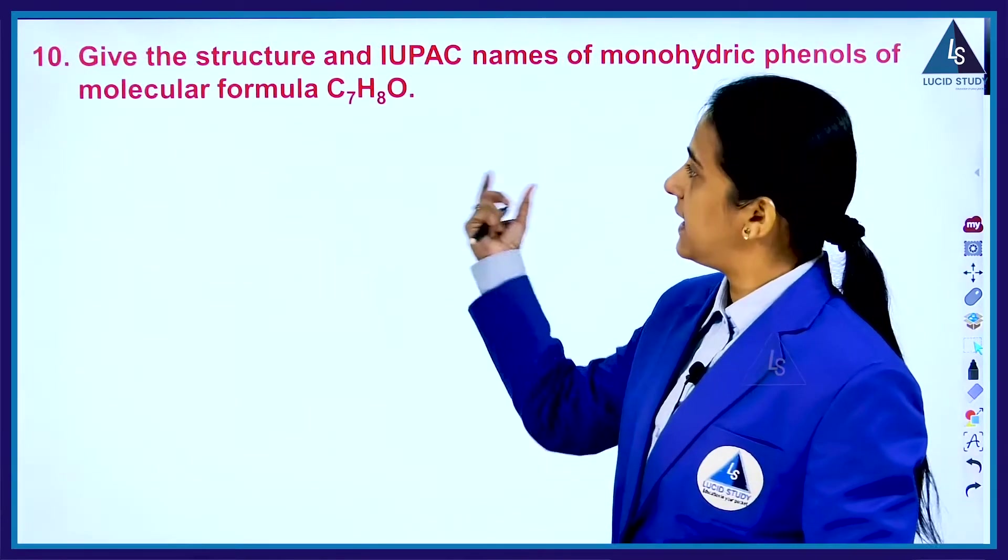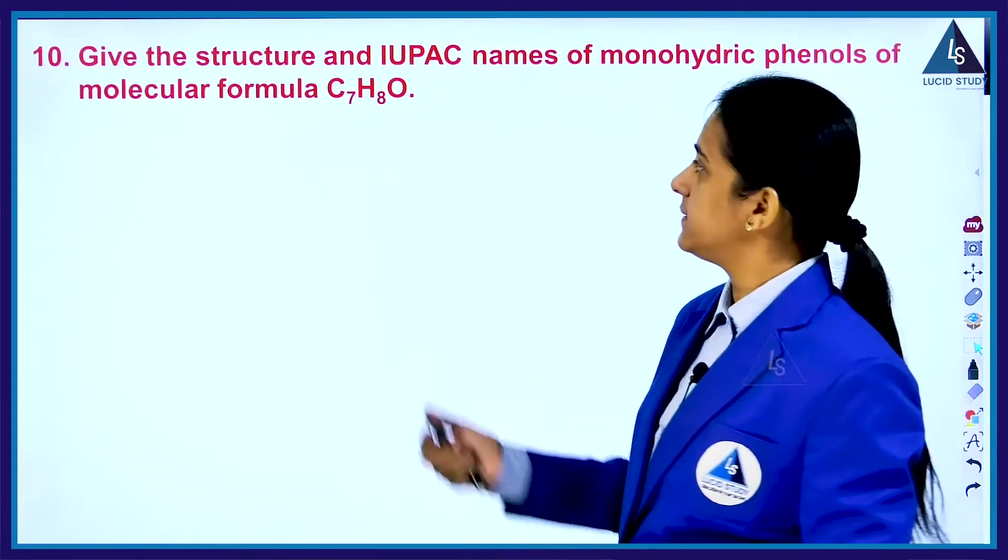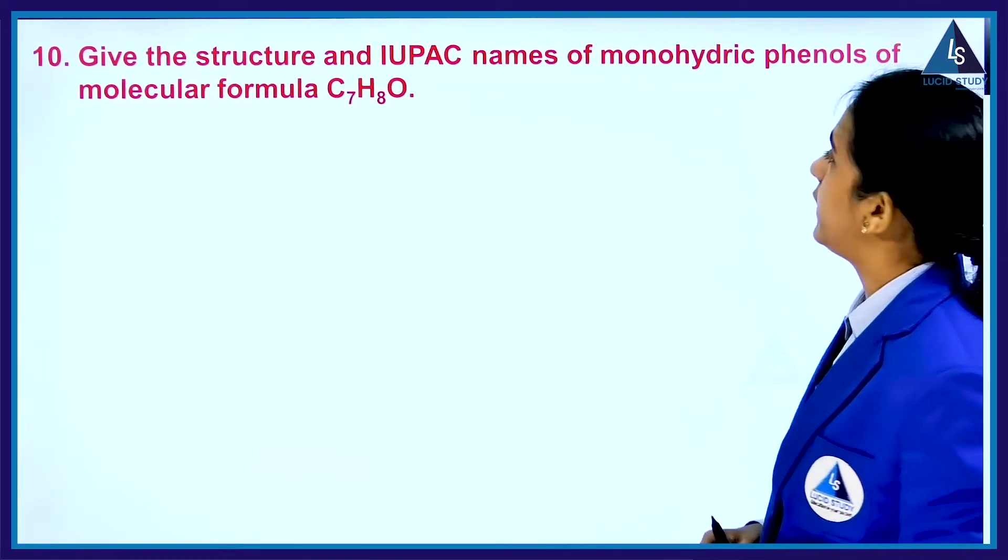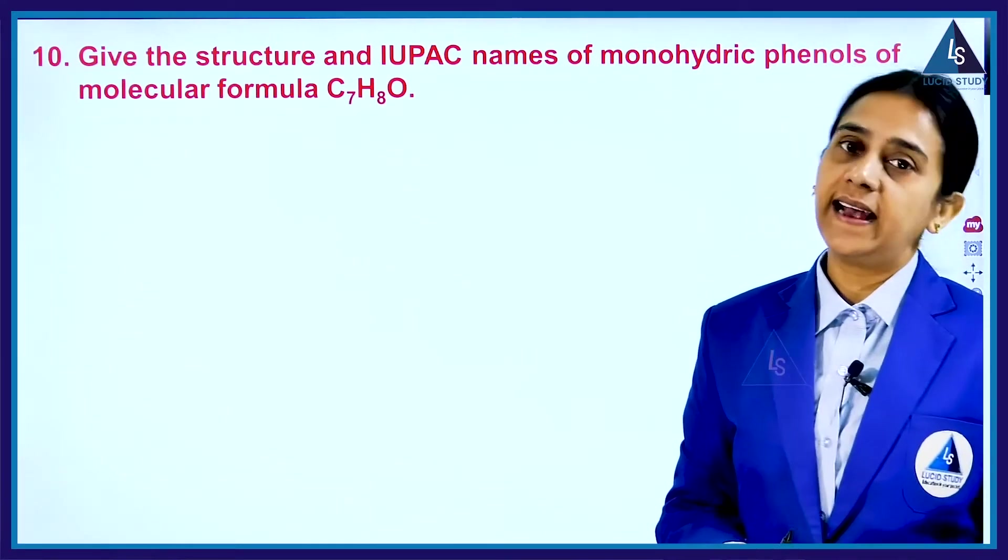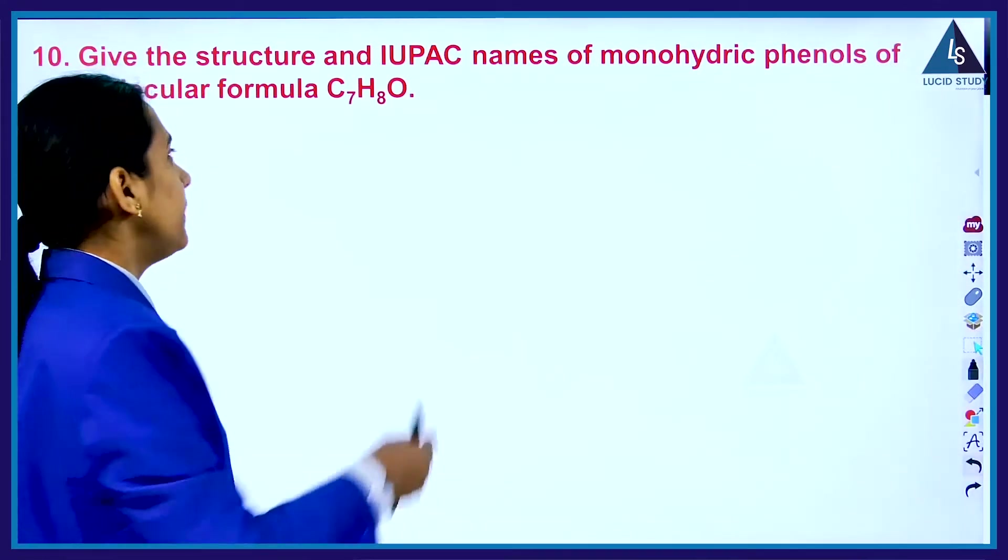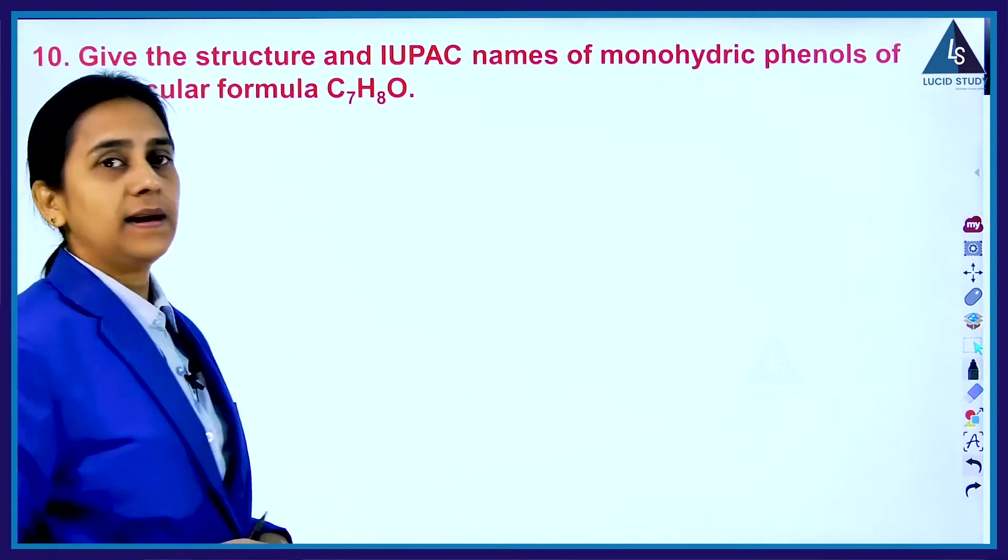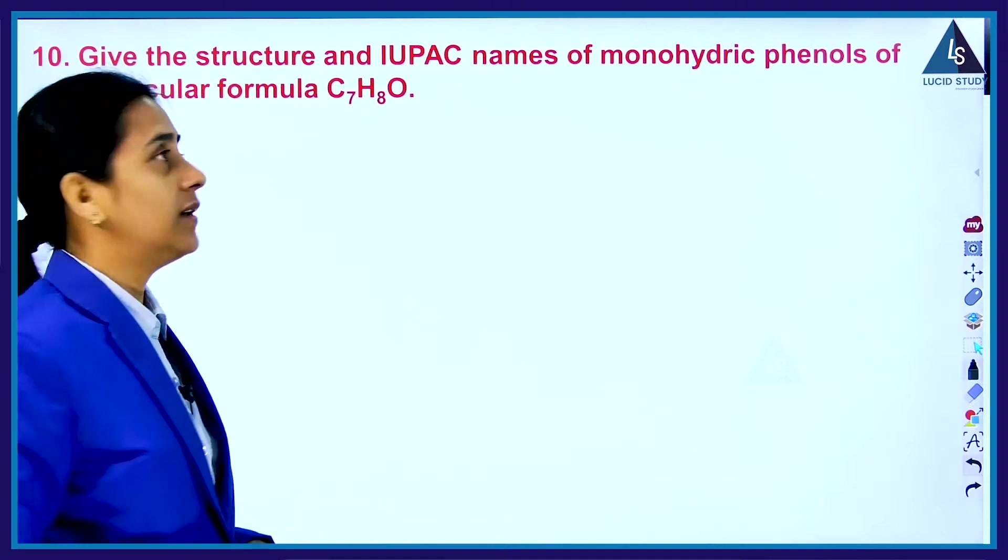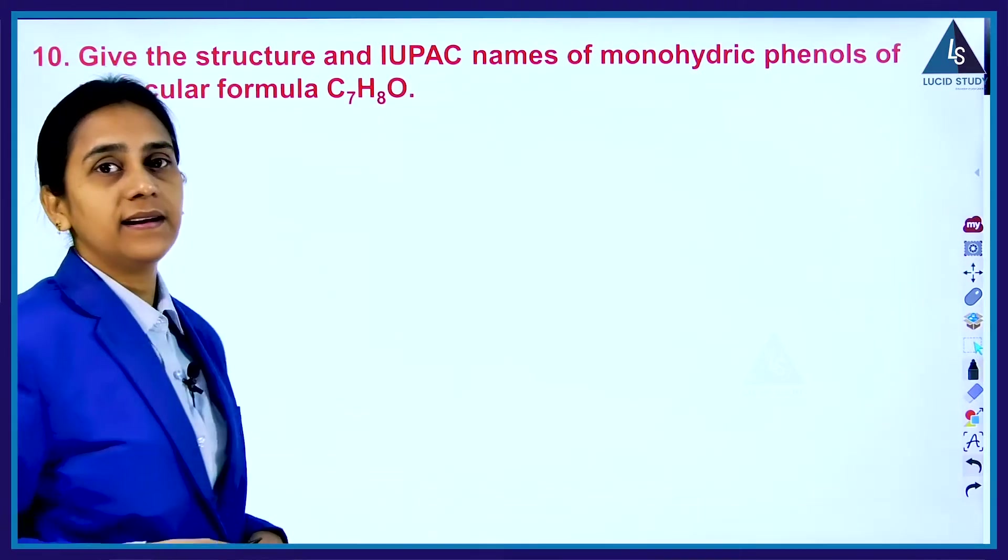The next question, the last question in section A: Give the structure and IUPAC names of monohydric phenols of molecular formula C7H8O. He is asking you with this molecular formula, give the possible structures of the monohydric phenol and their IUPAC names.